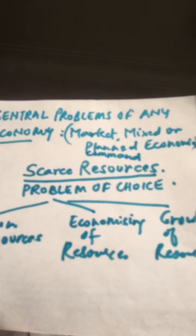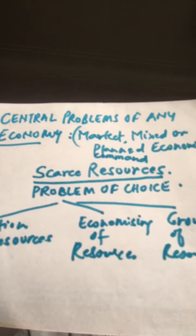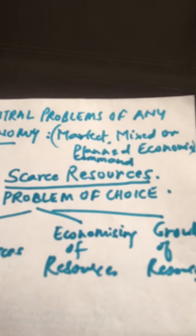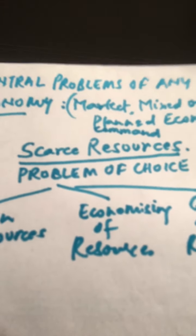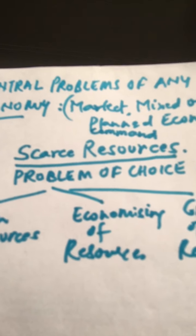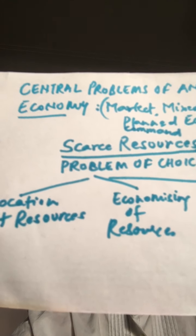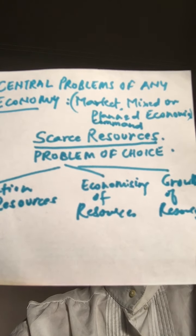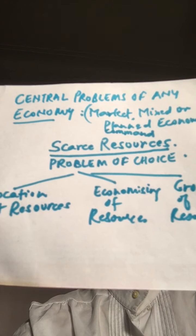The central problem looks into the allocation of resources. While deciding on allocation — how to produce, what to produce, and for whom to produce — the society must keep in mind that there should be no wastage. There has to be economizing of resources. Not only that, they also have to ensure growth of resources; resources have to keep growing. This is what makes the central problems so important, and every economy is beset by them.